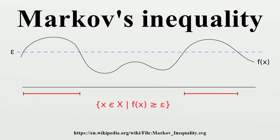An example of an application of Markov's inequality is the fact that no more than one-fifth of the population can have more than five times the average income.